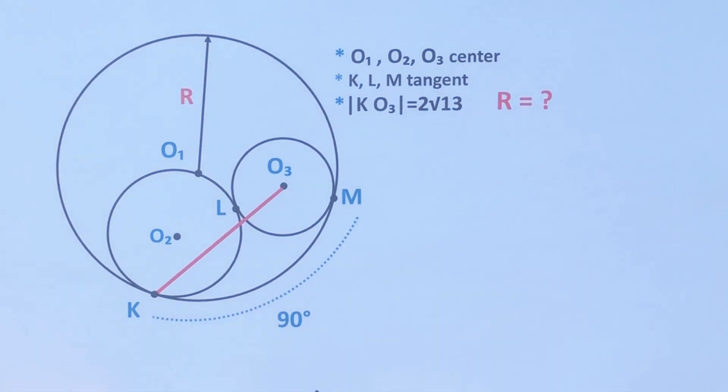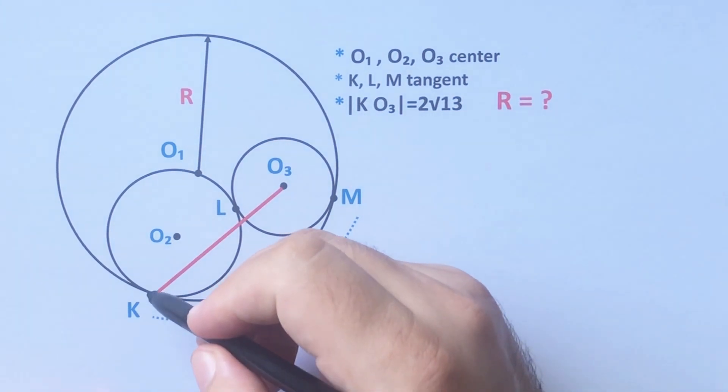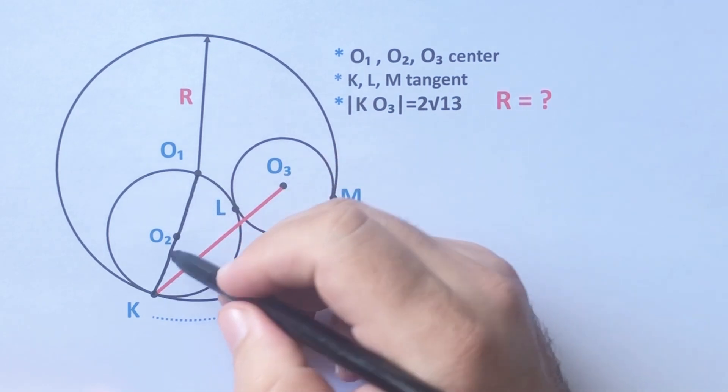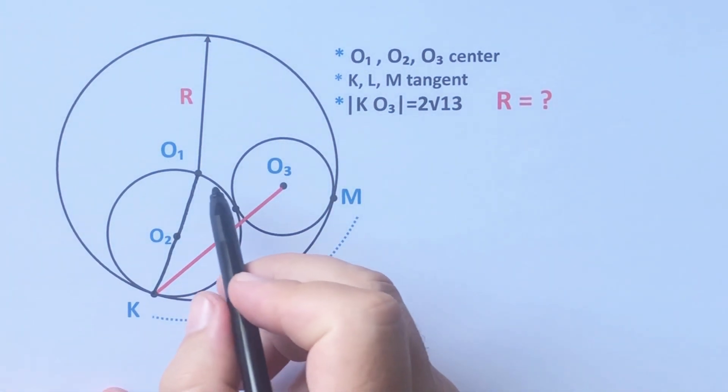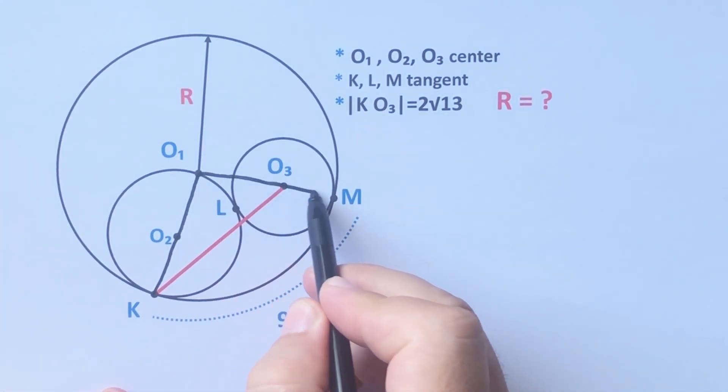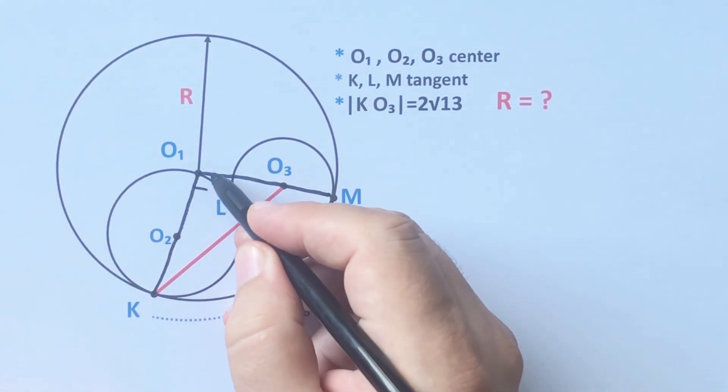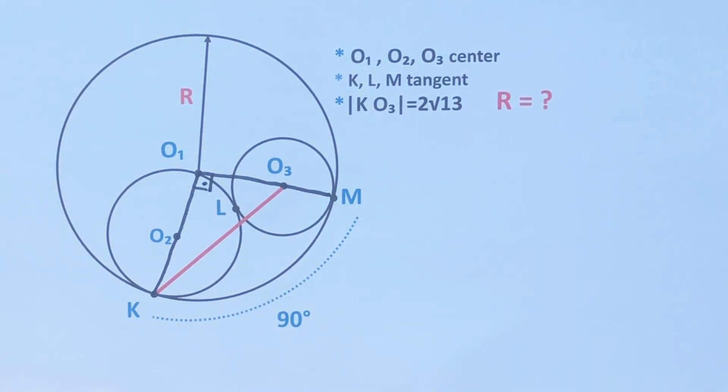The radius of the largest circle is asked. First of all, we know that if two circles are tangent and we connect their radii, this line must be linear because of tangency. In the same way, if we connect these three points, this line must be linear because of tangents. And if this arc is 90 degrees, here must be 90 degrees because of the central angle.